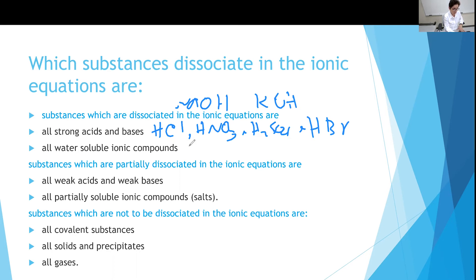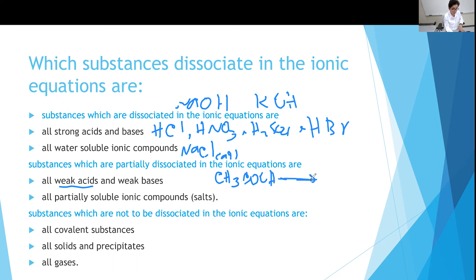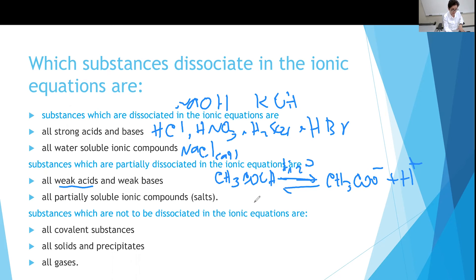All water-soluble ionic compounds also dissociate. For example, NH4Cl — based on the solubility rules, any compound containing a group 1A element is soluble in water, so it dissociates 100%. There are some substances that only partially dissociate. For example, weak acids like acetic acid (CH3COOH) — when it dissociates in aqueous solution, it reaches equilibrium, giving acetate ion plus hydrogen ion, but only a limited amount dissociates and the majority stays in molecular form.